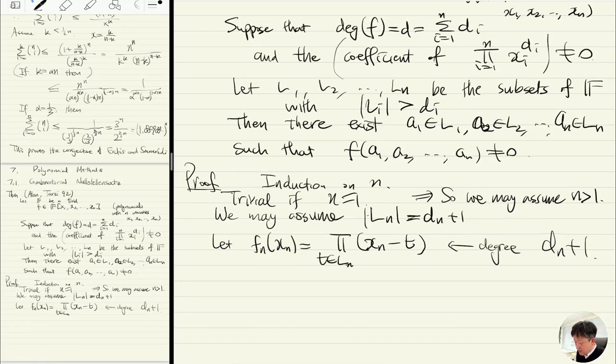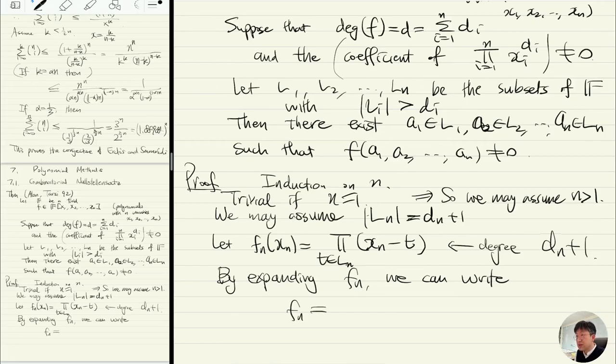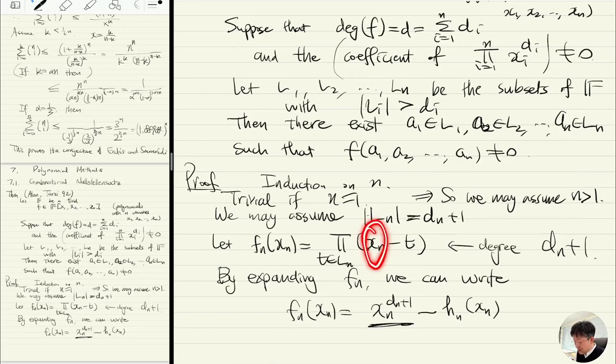This has degree dn+1. By expanding fn, we can write fn(xn) equals xn to the dn+1 minus hn(xn). This is the term obtained by multiplying all these things, and then this is the remaining terms.